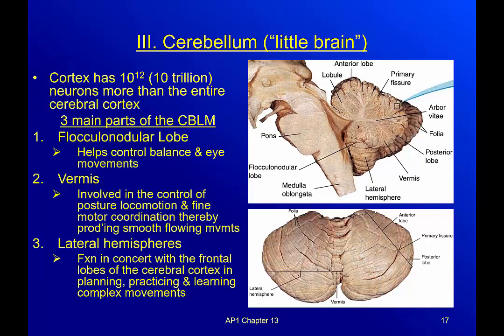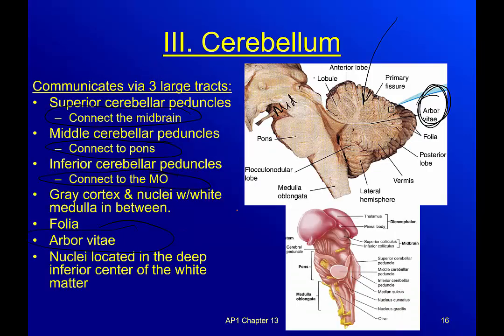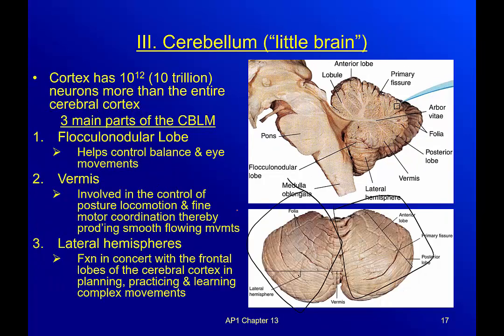You know something is wrong with the cerebellum when people have very spastic movements. The two lateral hemispheres function together with the frontal lobes of the cerebral cortex in planning, practicing, and learning complex movements. If what you planned and what you did don't match, this is the part that helps correct that — learning complex movements like writing, playing piano, or hitting a baseball.